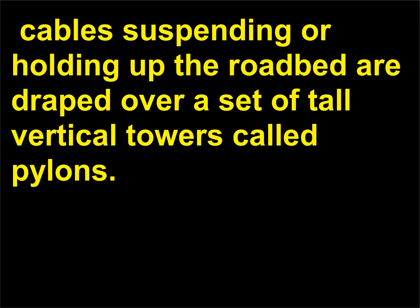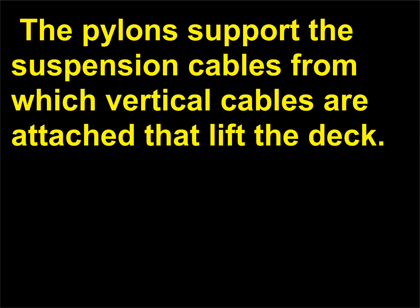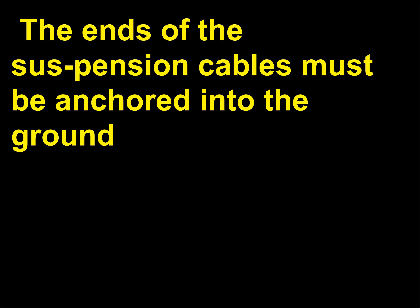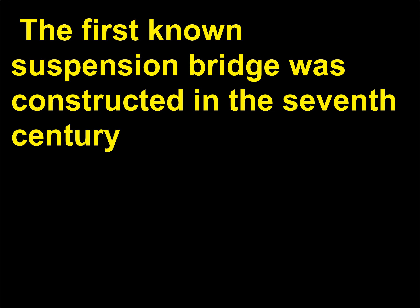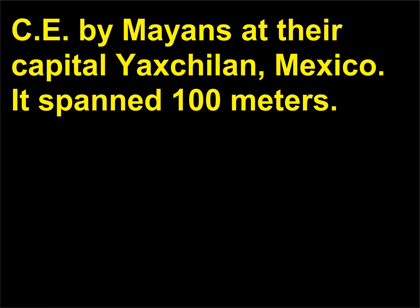In suspension bridges, cables suspending the roadbed are draped over a set of tall vertical towers called pylons. The pylons support the suspension cables from which vertical cables are attached that lift the deck. The ends of the suspension cables must be anchored into the ground at each end of the bridge to exert tension forces on the cables. The first known suspension bridge was constructed in the 7th century CE by Mayans at their capital Ixchelen, Mexico, and spanned 100 meters.